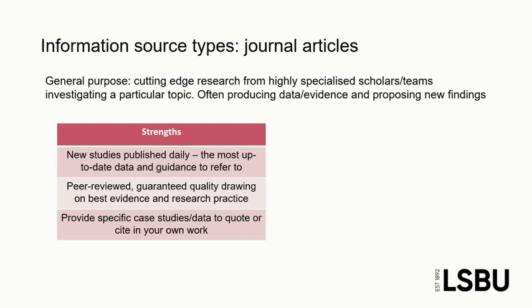Meanwhile, journal articles are shorter pieces of literature, often focused on one particular topic or case study. Depending on the discipline, they read more like a long essay or a structured report. Journal articles are published constantly, meaning they represent cutting-edge research in the discipline. Often, journal articles will be producing data or looking at previously unstudied elements to propose new findings. We have mentioned already that articles are peer-reviewed, which means they are good sources to use in your academic work. They also provide specific data and case studies that will help you to answer a question or make an argument in your own essays.